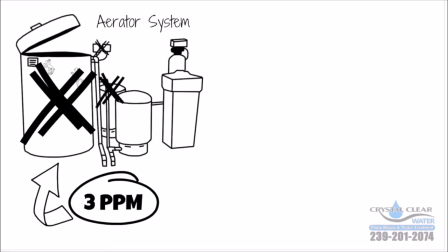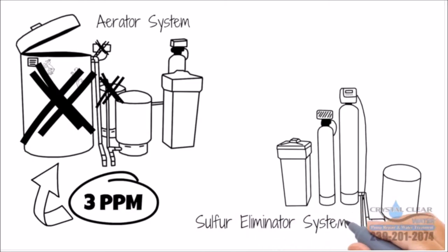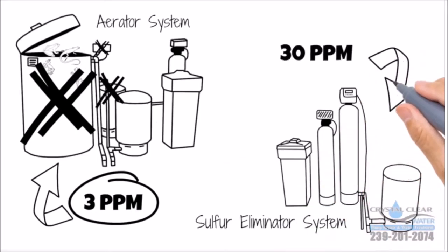The sulfur eliminator system has a lot less components to replace. It's not an open system and it will remove 30 parts per million of sulfur. So now that you see how the system will save you money, time, and headache, pick up your phone.